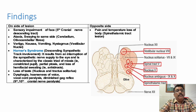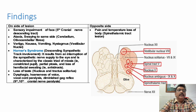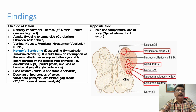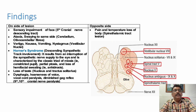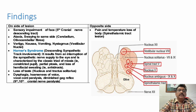Another important problem is Horner's syndrome. It results from the interruption of the sympathetic nerve supply to the eye, with the descending sympathetic tract involved up to T1. It is characterized by a classic triad of miosis (small pupil), partial ptosis — unlike third nerve palsy, which gives complete ptosis and pupil dilation — and loss of hemifacial sweating, or anhidrosis.